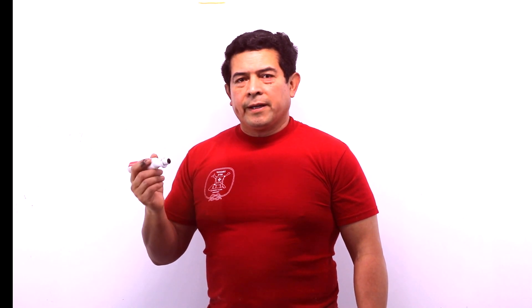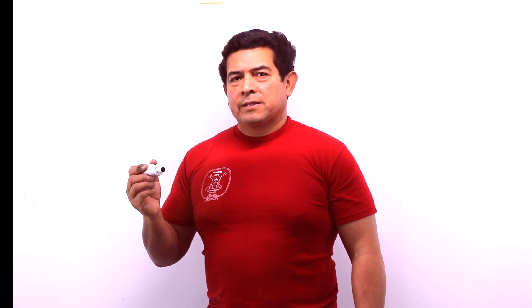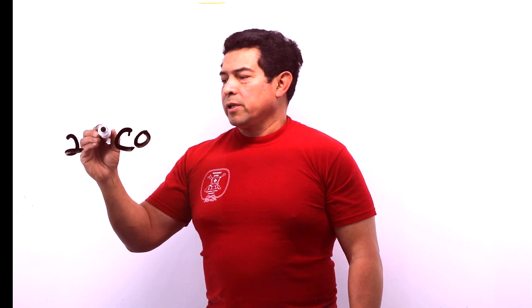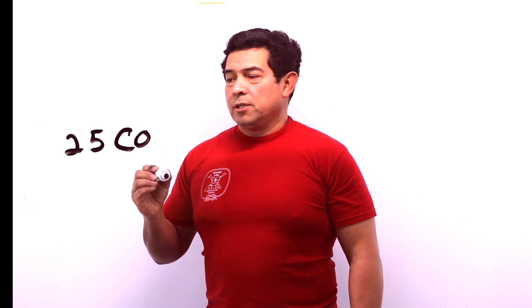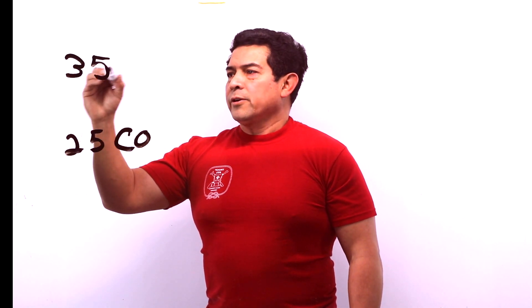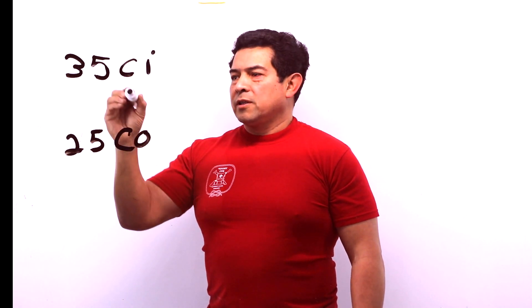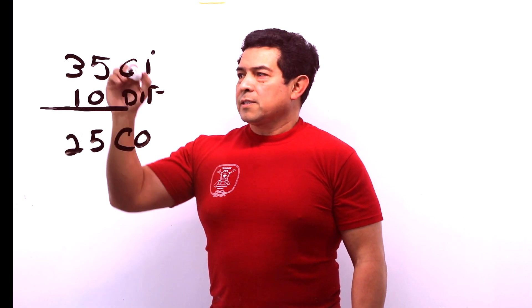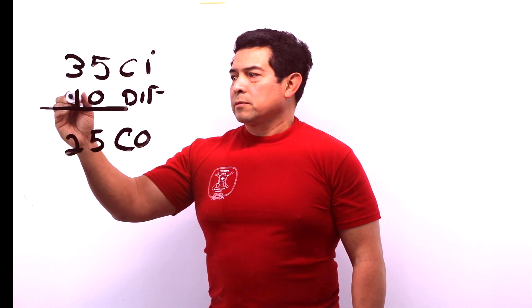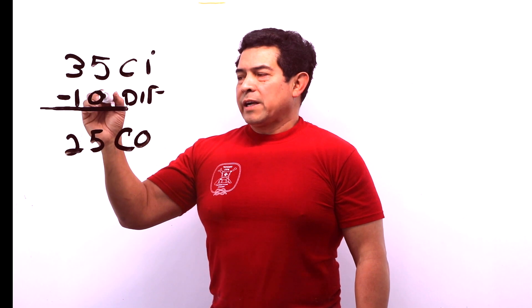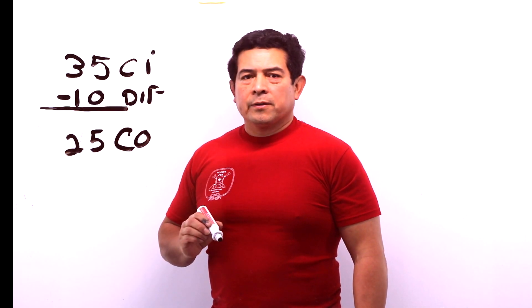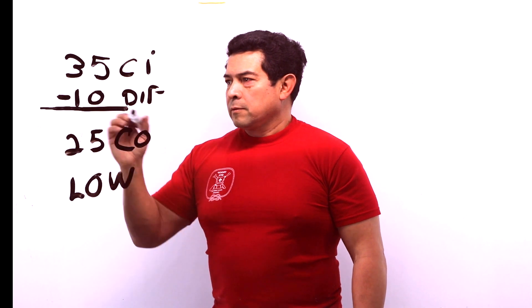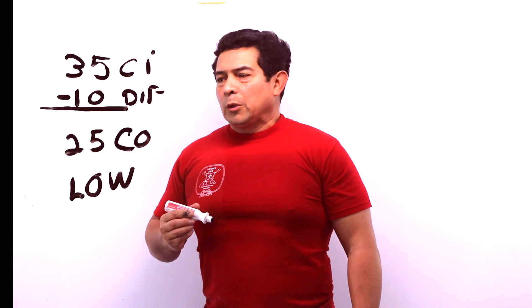Now on a low pressure switch, the cut out is the cut in minus the differential. So we want it to cut out at 25 PSIG. The cut in is going to be 35. The differential is going to be 10. The cut out is the cut in minus the differential. So you take the 35, subtract the 10 for the differential, and the cut out is going to be 25 on the low pressure switch. That's what that means and that's how you would set a low pressure switch.